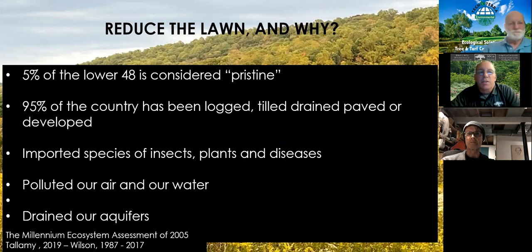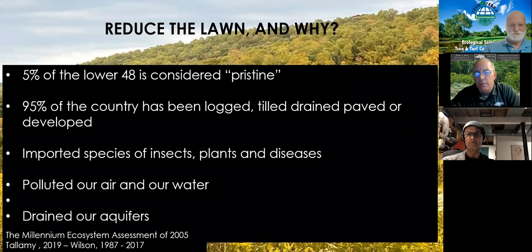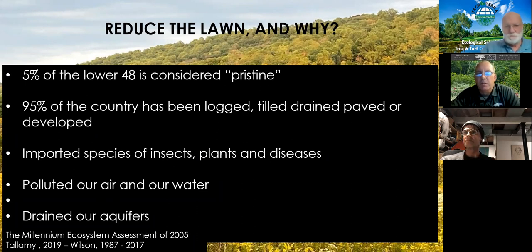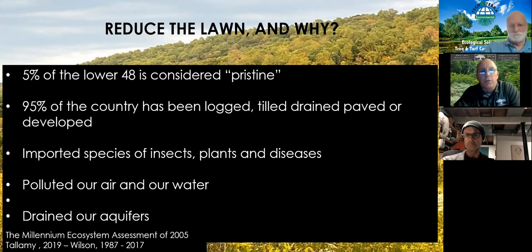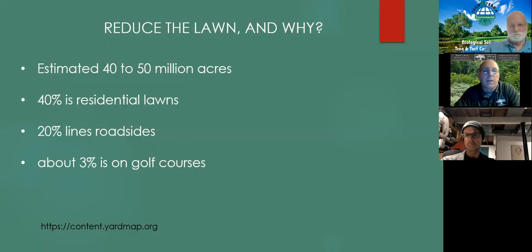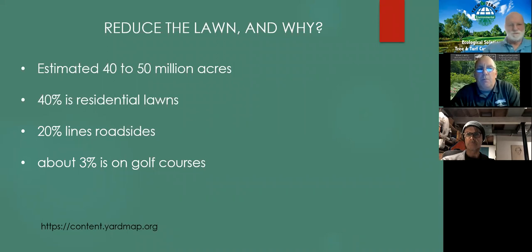Only five percent of the lower 48 states is considered pristine — 95% of the country has been logged, drilled, or paved. We have issues with all kinds of invasive species, plants, and diseases. Water quality is not great, and we've drained our aquifers. If we follow the rules of green infrastructure — rain gardens and things of that nature — we can certainly help that issue too. We have 40 to 50 million acres of maintained lawn in this country, and probably less than one one-hundredth of a percent of that might even be organic.